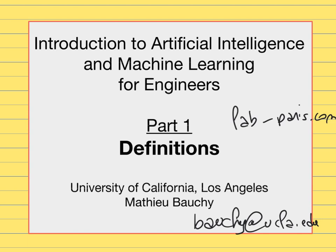In this first video we are going to review a few examples of applications of machine learning and why it is interesting for engineering — what kind of engineering problems can be solved by artificial intelligence and machine learning, specifically in the context of civil engineering, which is the department within which this class is offered at UCLA. Then we'll begin by defining some terms: what is artificial intelligence, what is machine learning, and how do they relate to each other.